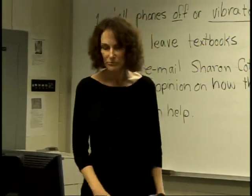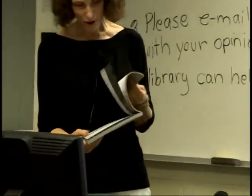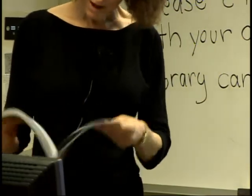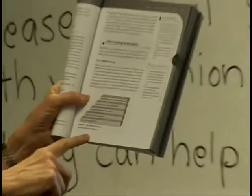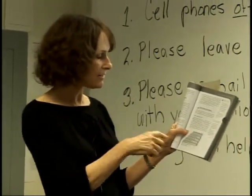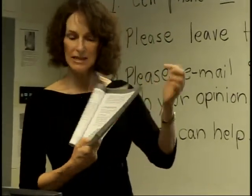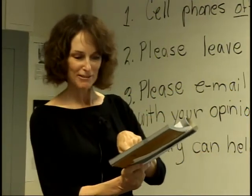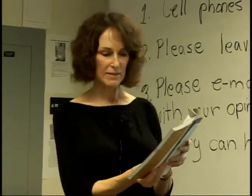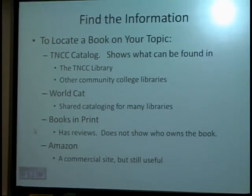Then we start talking about finding the information. In this book, almost every chapter has a little diagram showing the steps in research. First you define the needs — that's where we decided on the topic. Then find the information, which is step two. Each chapter corresponds to a step: define the need, find the information, evaluate, organize, or communicate the information. So we start with finding the information and talk about locating a book on your topic.